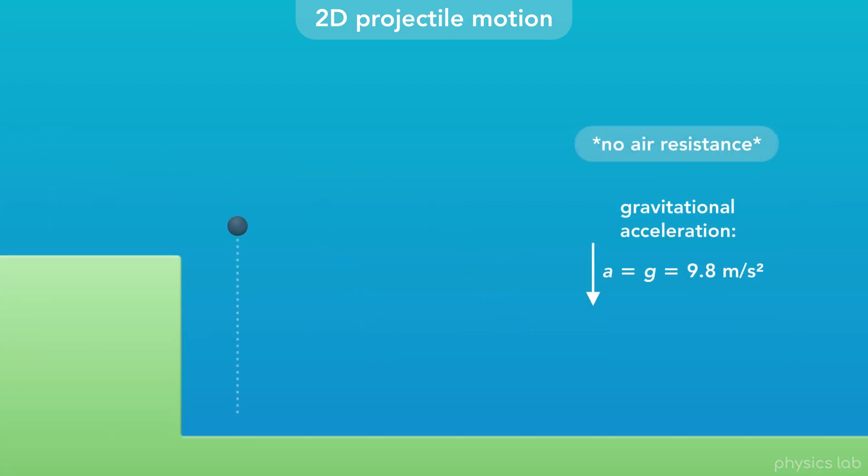If we ignore air resistance, an object always falls at the same rate due to gravity, 9.8 meters per second squared. So, a ball that's launched horizontally will hit the ground at the same time as a ball that falls straight down.